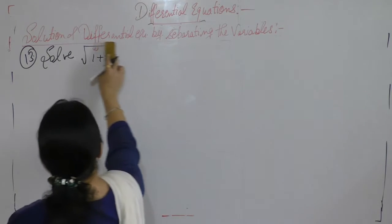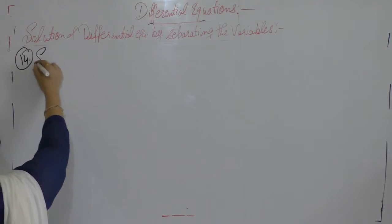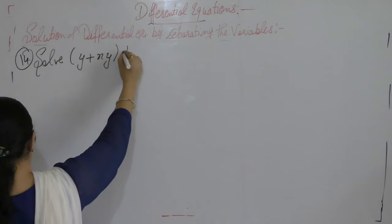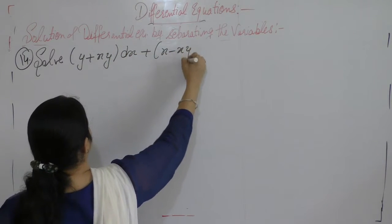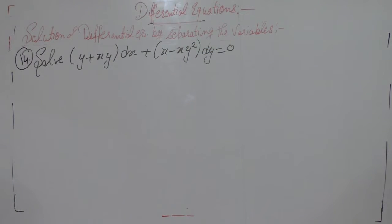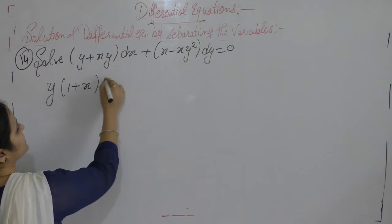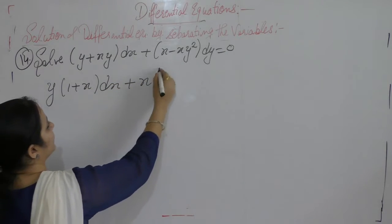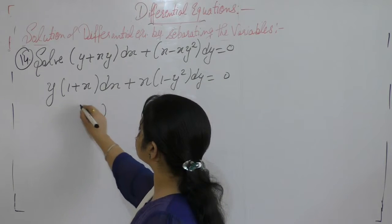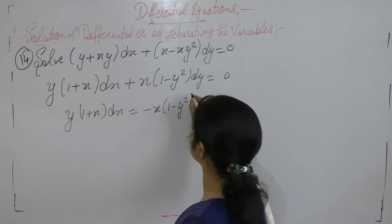Now the next question: solve (y + xy)dx + (x − xy²)dy = 0. Separate the variables — take y common from the first group: y(1 + x)dx, and take x common from the second group: x(1 − y²)dy = 0. So y(1 + x)dx = −x(1 − y²)dy.